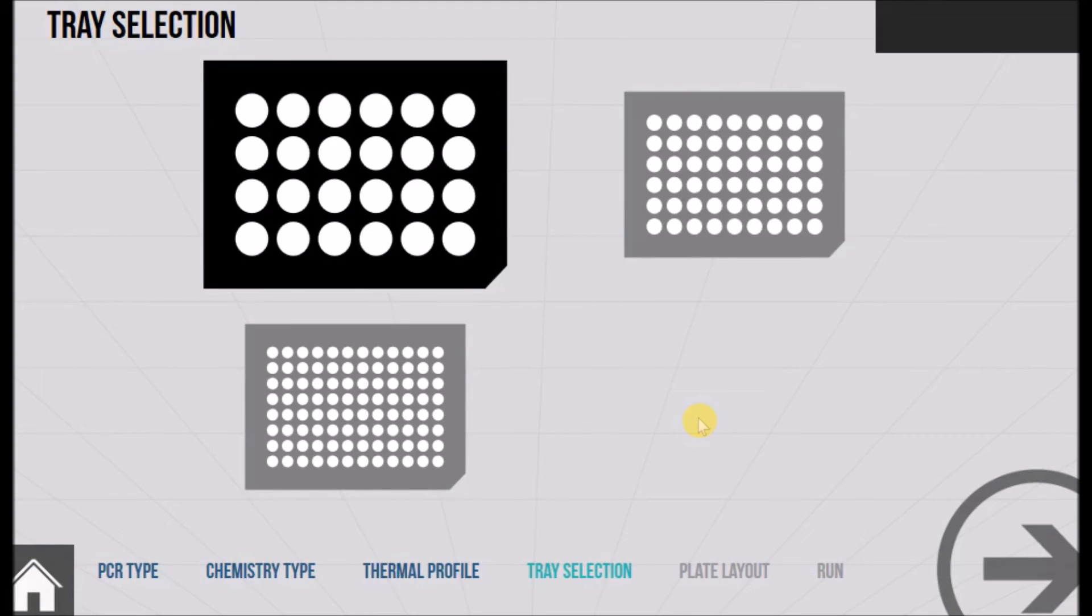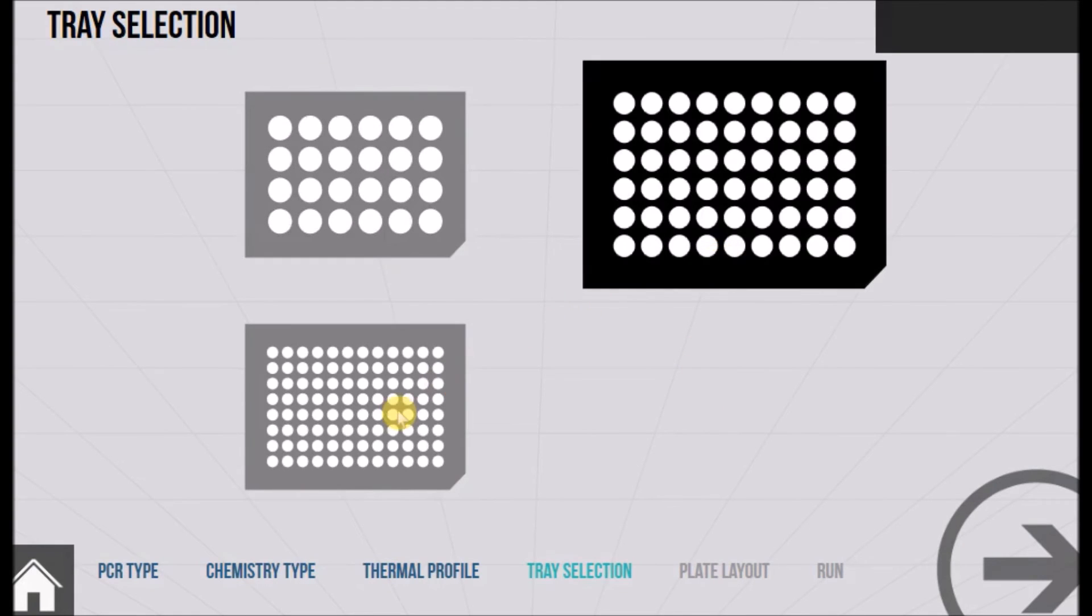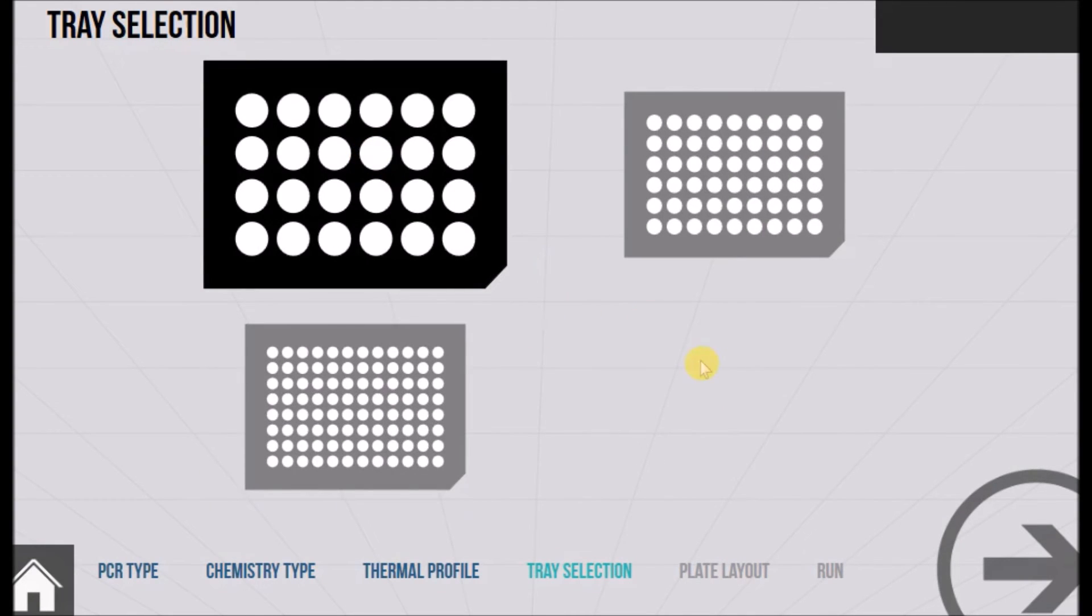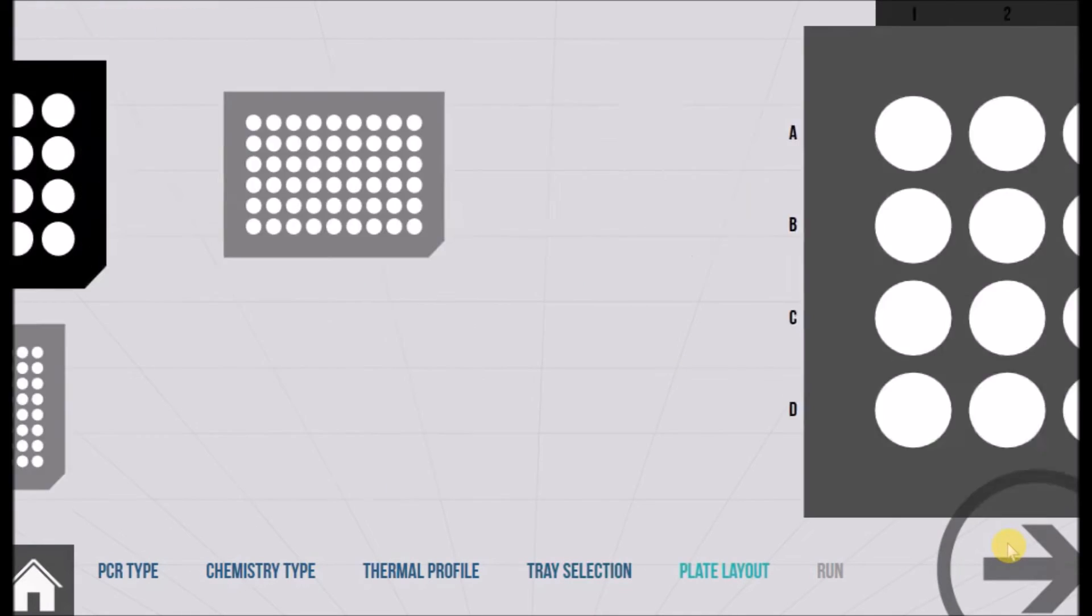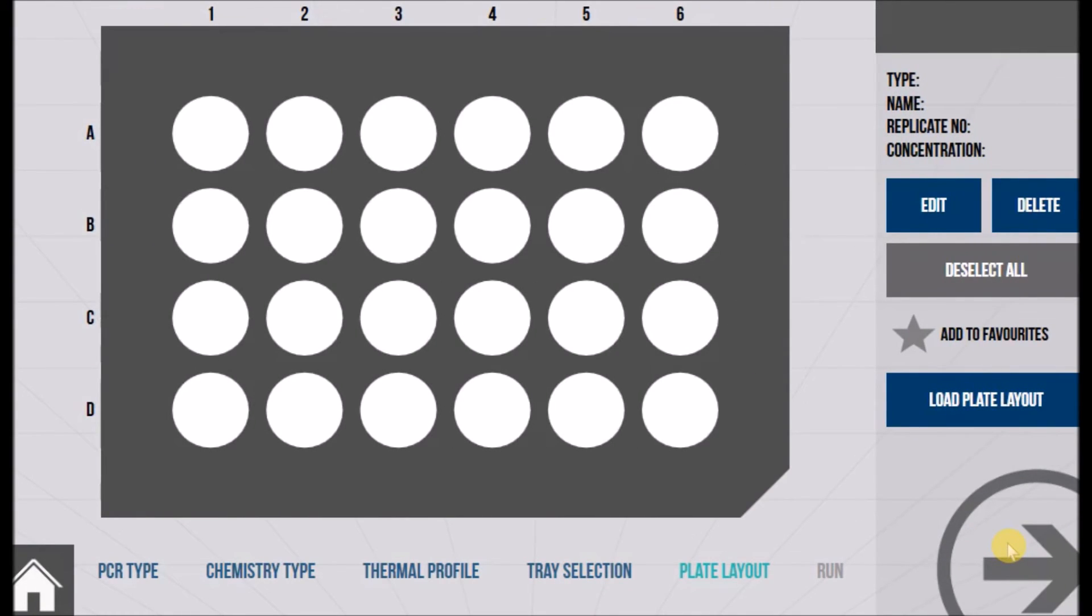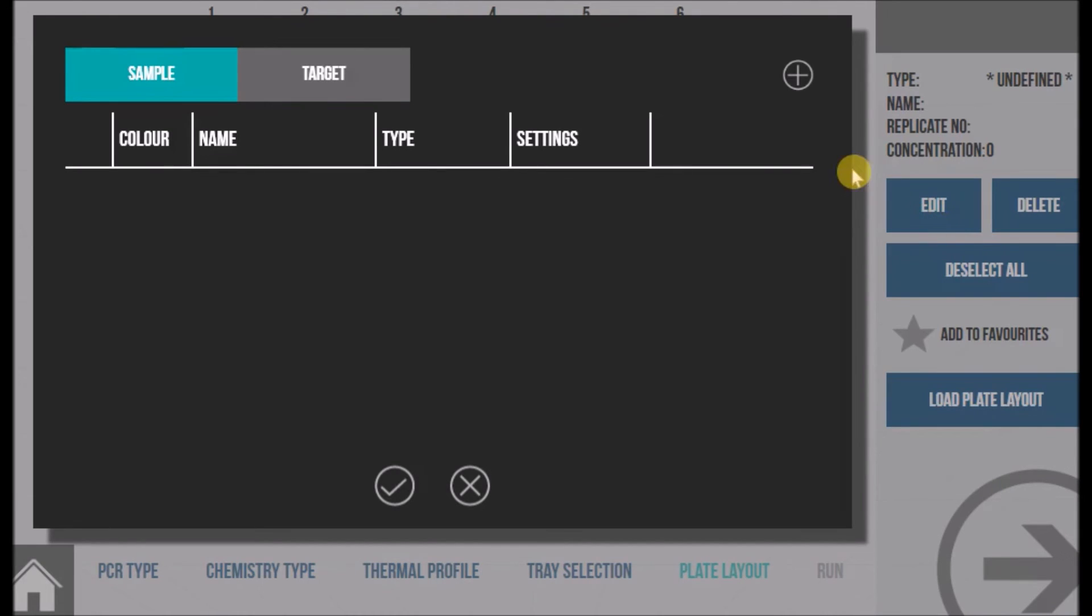The plate size being used is then selected and pressed next. This here is an optional page used to label the wells. You simply select the wells you wish to label, and then press edit. Here you can push add to add a sample or target type.